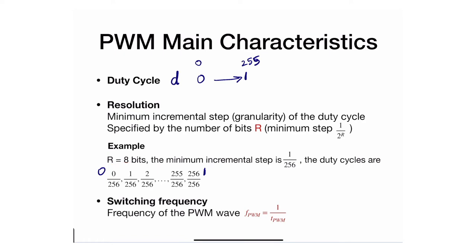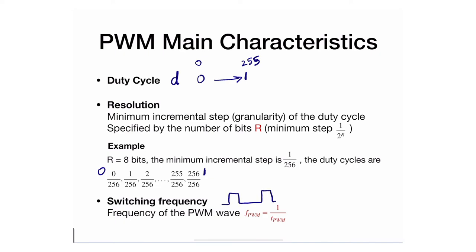The last main characteristic of a pulse-width modulation signal is the switching frequency. A pulse-width modulated signal is just a square wave — it might have a different duty cycle, but it is still a periodic square wave. Because it's periodic, it has a frequency, which we specifically call the switching frequency for pulse-width modulation.